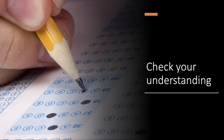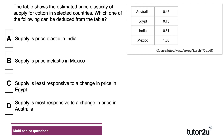Here's a quick multiple choice question to test your understanding. The table on the right-hand side shows the estimated price elasticity of supply for cotton in selected countries. The question is: which one of the following can be deduced from the table? This is a moment to press the pause button on the video — have a go at the question, then press play when you want to go through the answer.